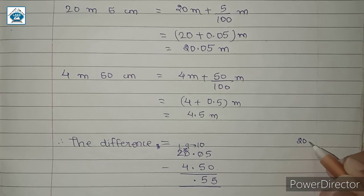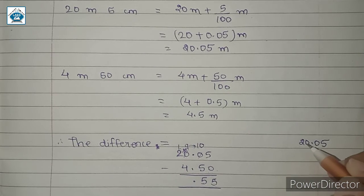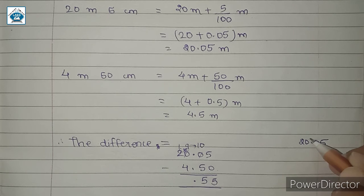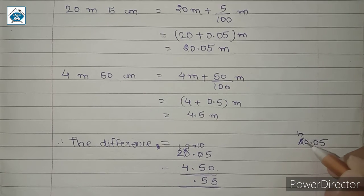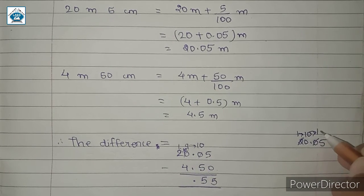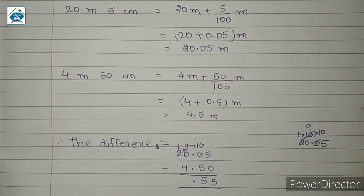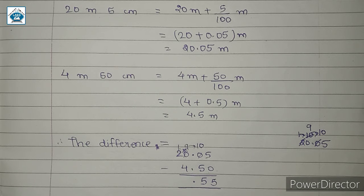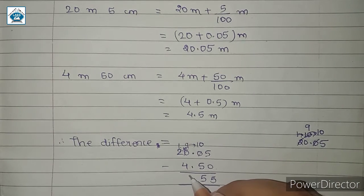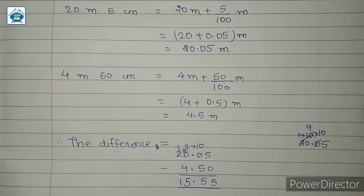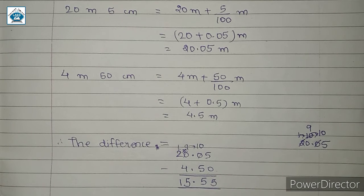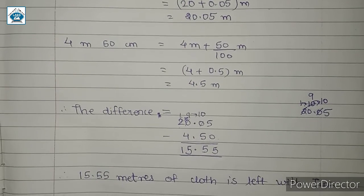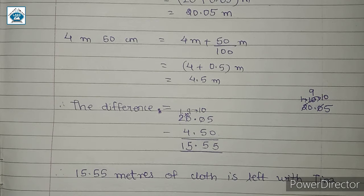So 20.05 minus 4.50: we need to carry forward since there are zeros. We carry 1 from here; this becomes 10, and we give 1 over here. So 9 minus 4 is 5, and here we have 1 as it is. So the result is 15.55. Therefore, 15.55 meters of cloth is left with Tina.